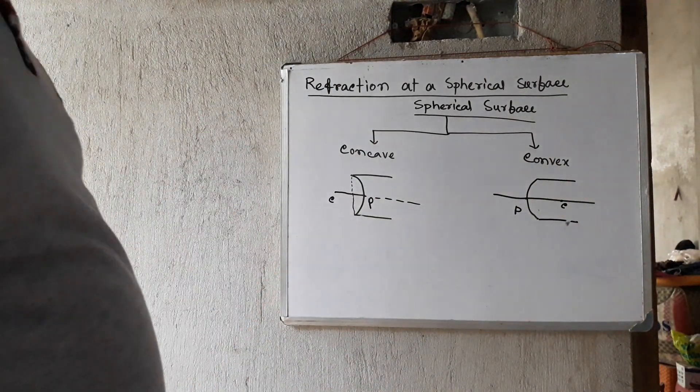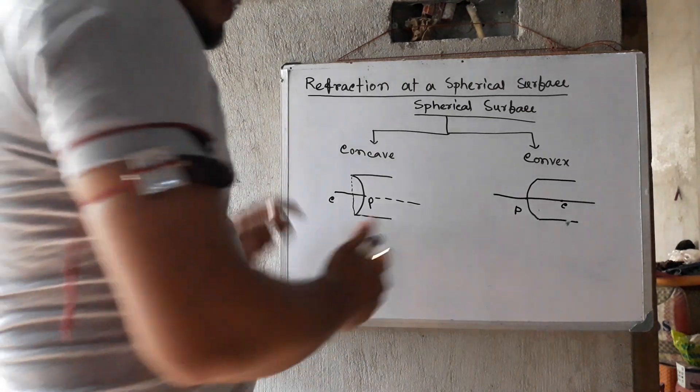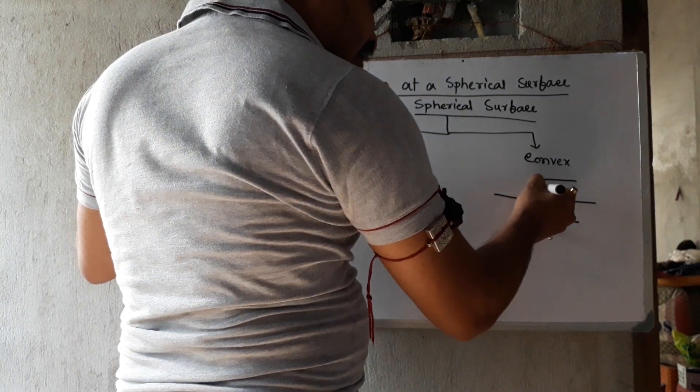This is the pole. This is the radius of curvature. This is the connecting point, the last point and connecting point.